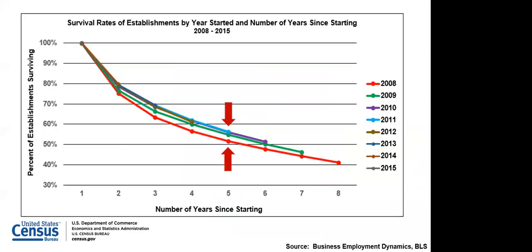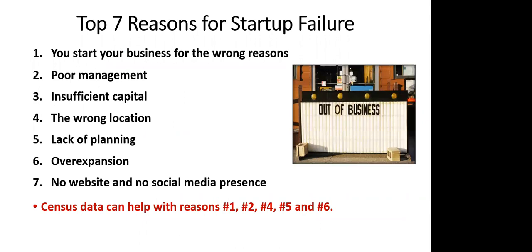I'll show you a NAICS search. This shows the survival rate of businesses basically by year started and the number of years since starting. What this is showing is that regardless of when you start, around year five roughly just over 50% of businesses are still surviving. It gets even worse out to year seven and eight. Here are the top seven reasons startups fail: people start for the wrong reasons, thinking they'll make money very easily; poor management; insufficient capital; the wrong location; and lack of planning.